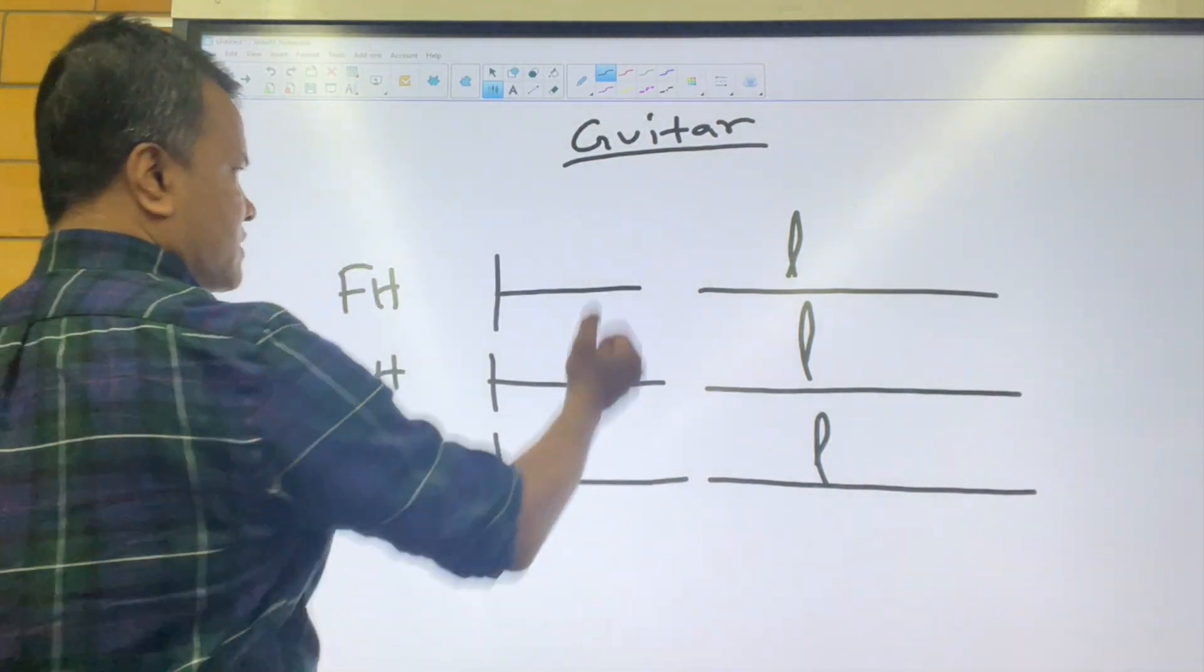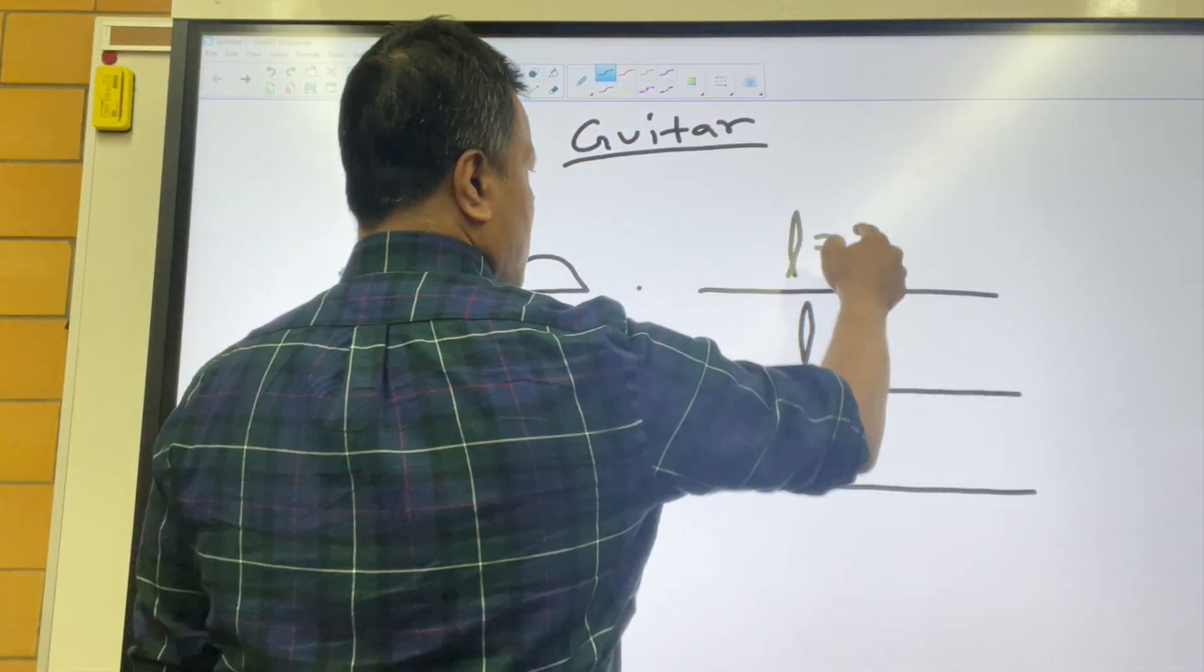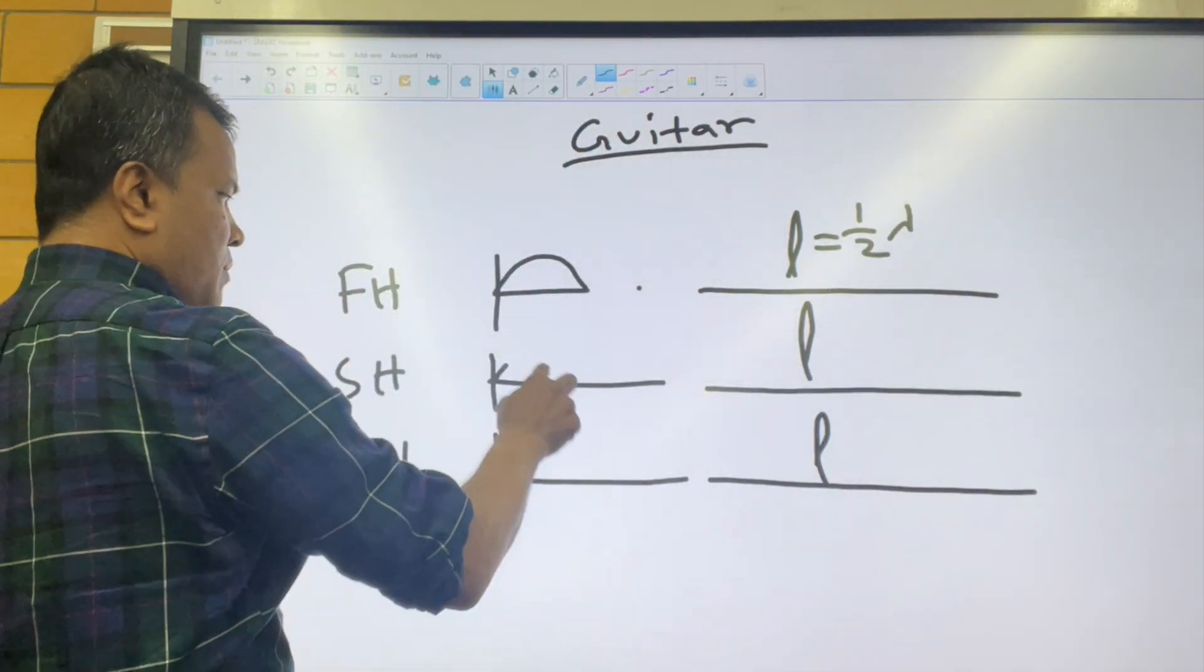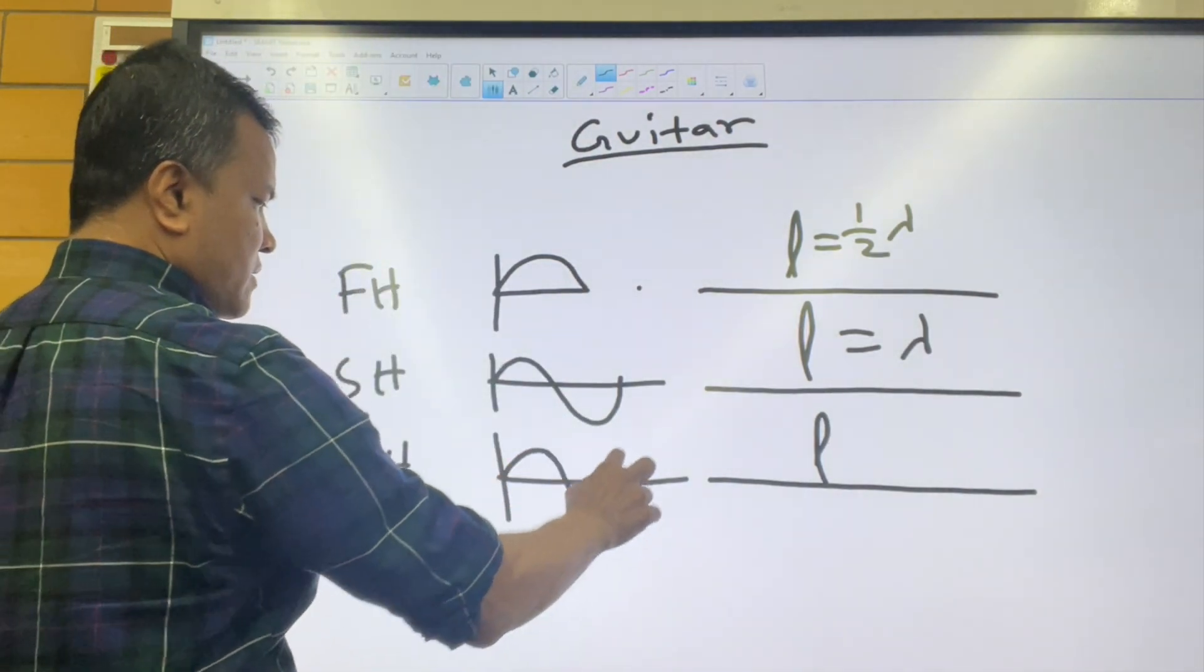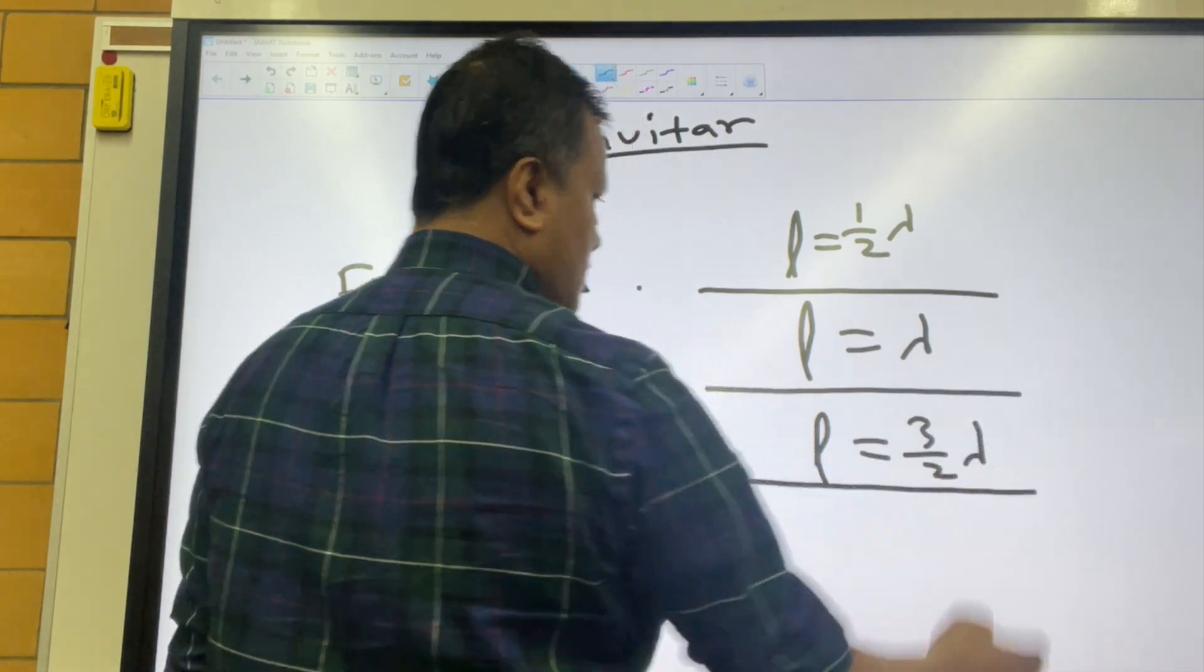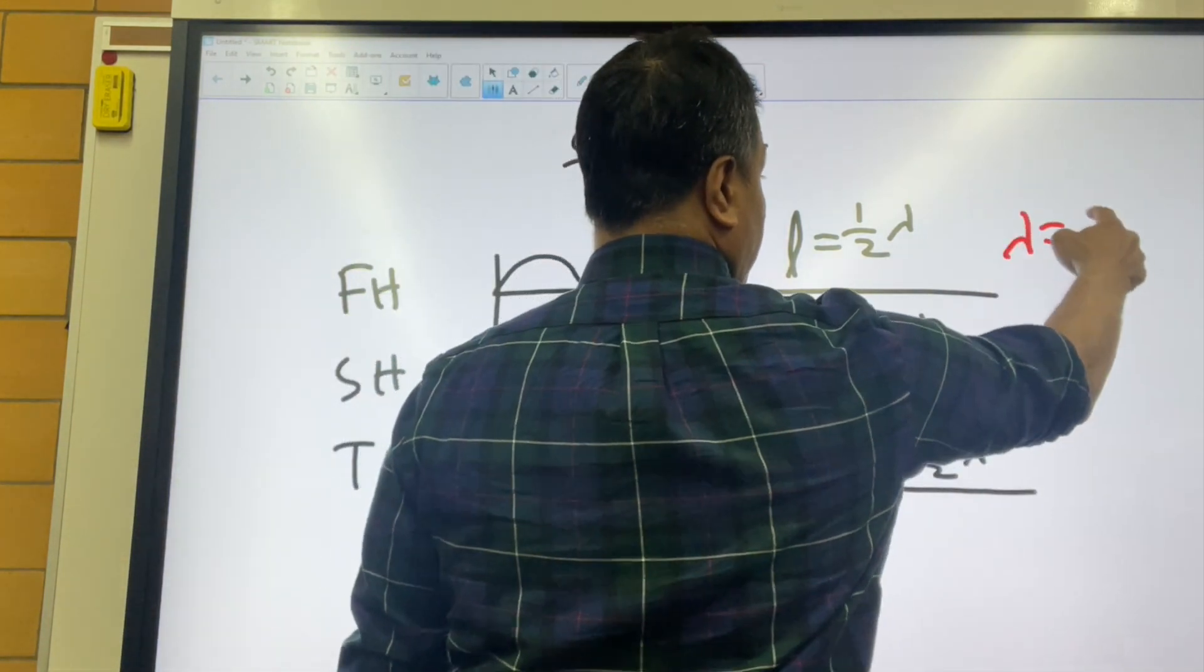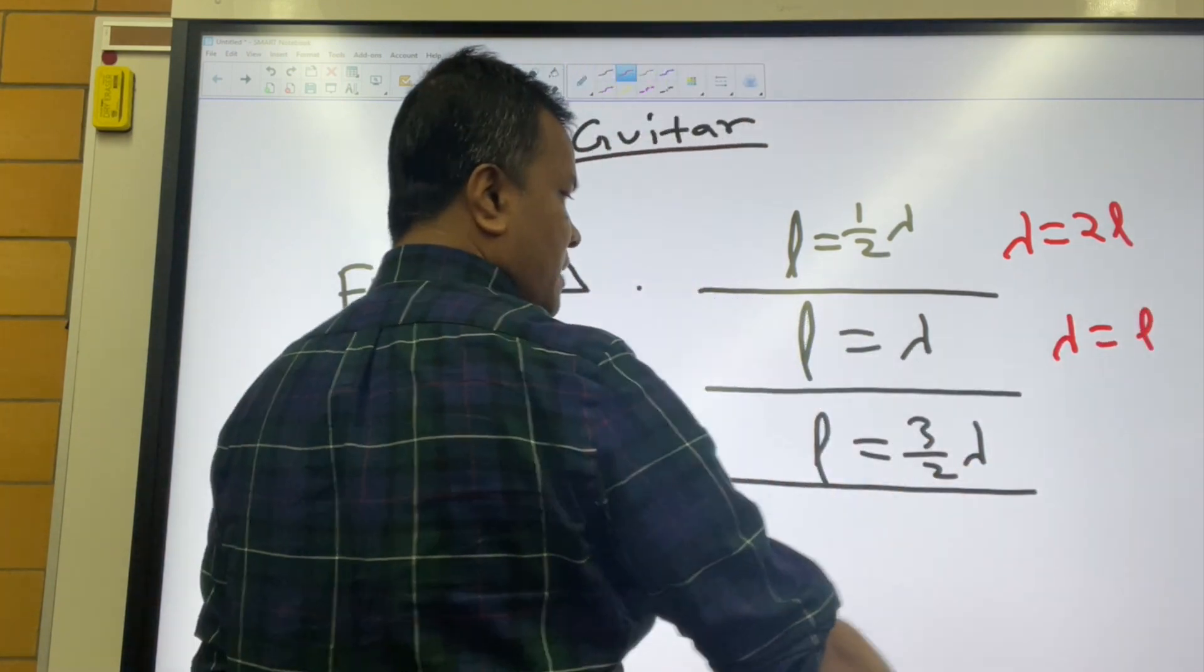Now connect this idea with the first harmonic, second harmonic, the third harmonic. The first harmonic, you got half a wavelength. The second harmonic, you have one wavelength. The third harmonic, you have one and a half wavelengths. What would be the lambda for the first harmonic? 2L. What would be lambda for the second harmonic? L. What would be the lambda for third harmonic?